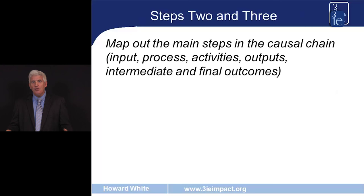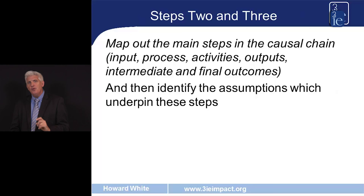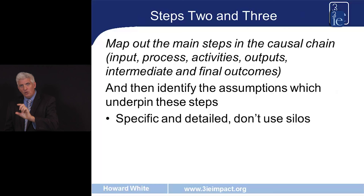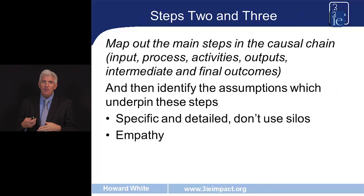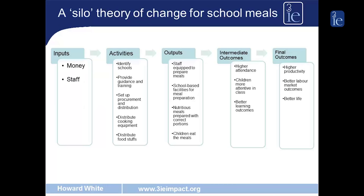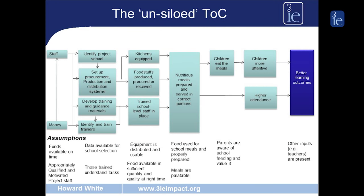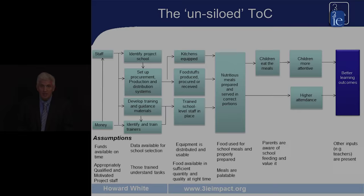Moving on to steps two and three, where we lay out the causal chain and identify the underlying assumptions. Some pointers: don't use silos. Be very specific in the details and the causal links in the theory of change. And when you're thinking about the programme, have empathy for intended beneficiaries to see the programme from their perspective. Here's an example of the school feeding programme presented in silos, where all the inputs lead to all the activities, lead to all the outputs and outcomes. But in reality, specific activities like distributing foodstuffs relate to specific outputs like the meal being provided. Laying out the theory of change not in silos makes it very clear which specific activities lead to specific outputs.